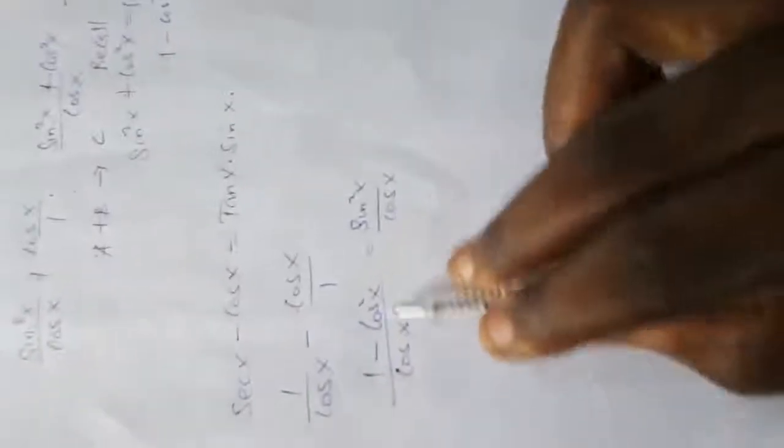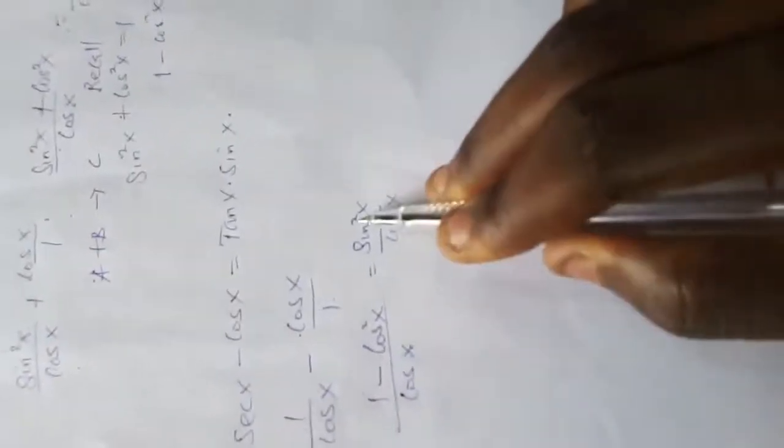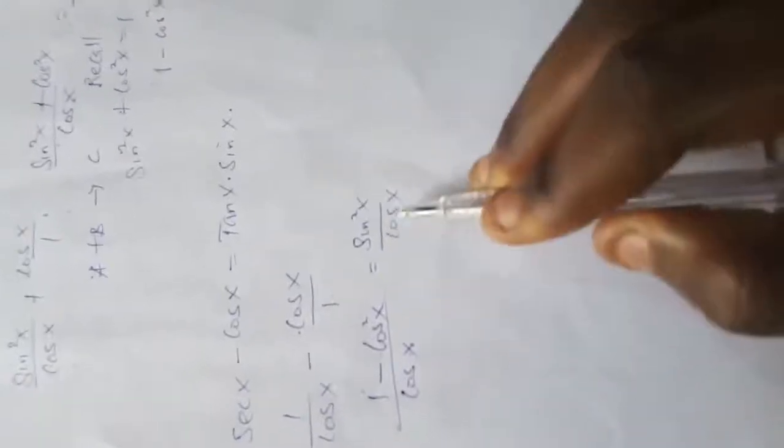Now from this, this is where I got it from. If you collect like terms from here, 1 minus cos squared x equals sine squared x. So that's what I did. I just simply wrote sine squared x in place of this, over cos x.